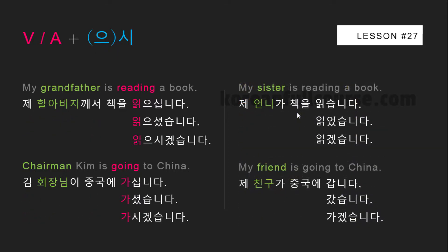For better understanding, let's compare sentences on the right-hand side and on the left-hand side: 'My grandfather is reading a book' vs. 'My sister is reading a book'; 'Chairman Kim is going to China' vs. 'My friend is going to China.' When talking about someone older or of high social position, we use the honorific particle 시. With 니다 and 습니다, we show respect to a person we are talking to; with 시 and 으시, we show how much we respect the person we are talking about.